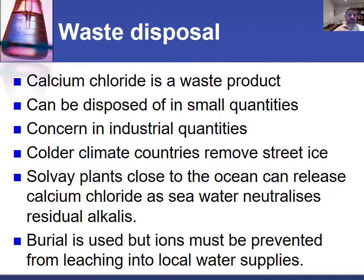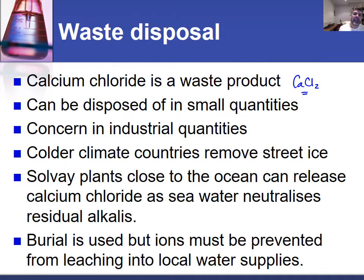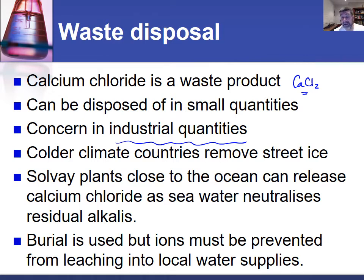The second area we need to review is waste disposal. The primary waste product is calcium chloride. In small quantities, calcium chloride can be disposed of through burial or release into waterways. But in larger quantities it's not so good, and in the quantities produced by the Solvay process, it can't simply be released into the environment — something specific must be done to limit its environmental impact.